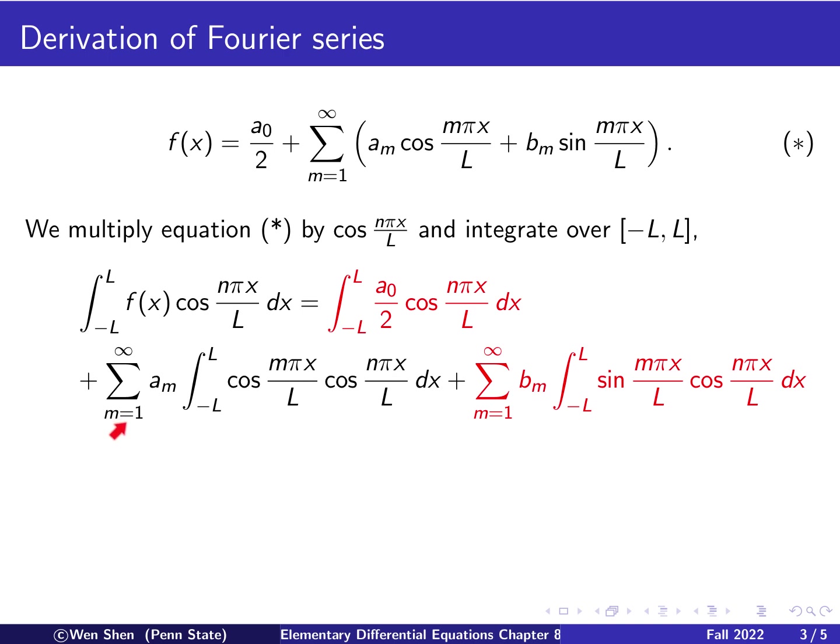We integrate each term. So take this term here, multiply by that cosine function and integrate. And then here we actually have two summations, one for the term of cosine function and one for the sine function. For the cosine, you're summing over am. Now am is in front of this cosine function, and let's multiply by the other cosine function. Since this is a constant, we move it outside the integration sign. And the same happens for this sine function.